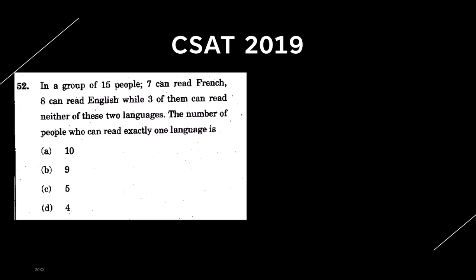In the exam, you can expect around 6 to 7 questions on set theory. But they are not going to be simply formula application. You need a bit of smartness and common sense to come to the solution. Basic option elimination techniques are very helpful in these questions, where you don't know the final answer directly, but it's easier to eliminate the options to arrive at the final answer.